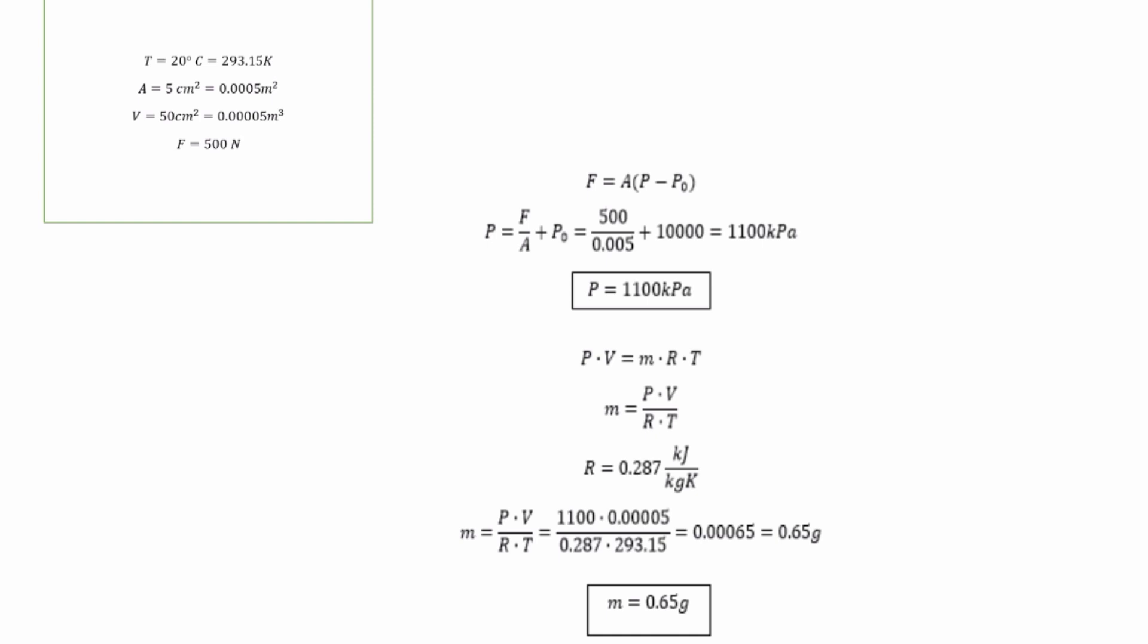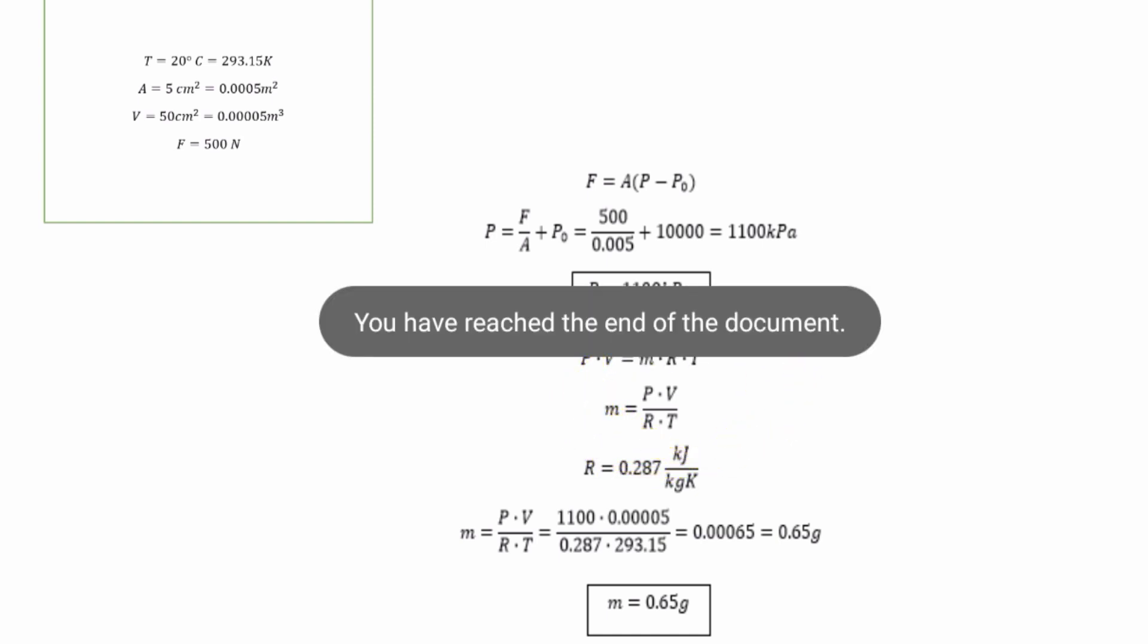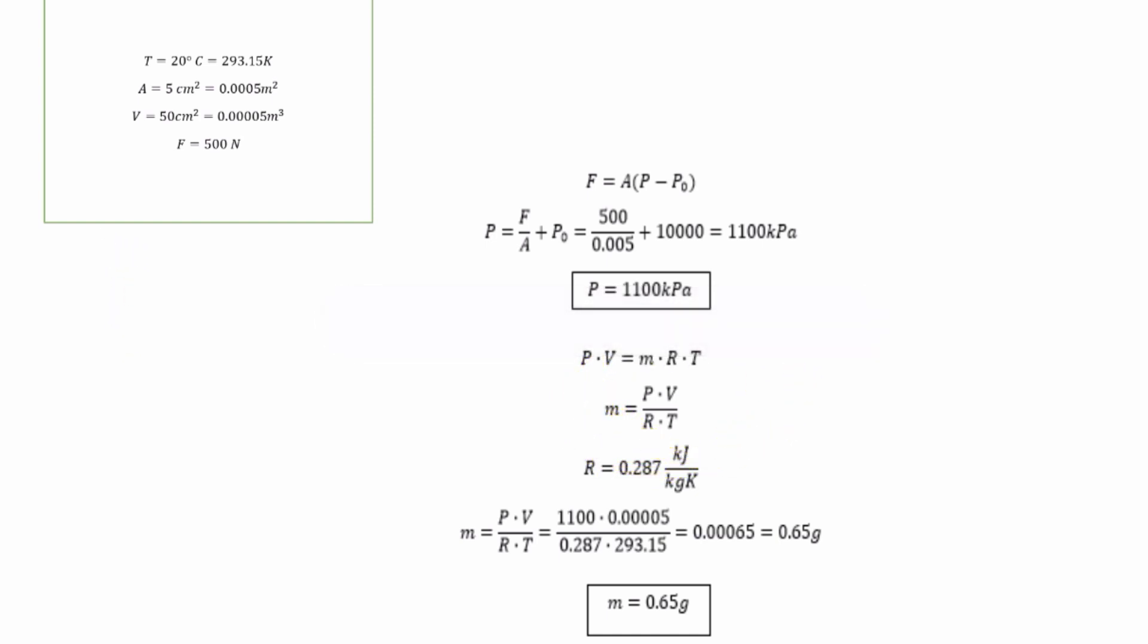R equals 0.287 kJ per kg·K. You'll just have to look for this in the given data.